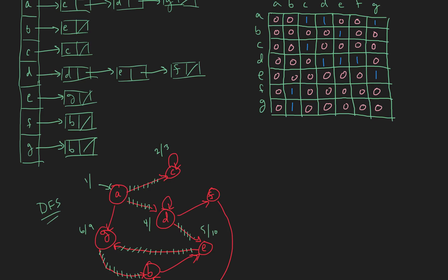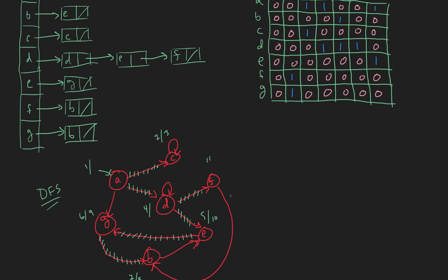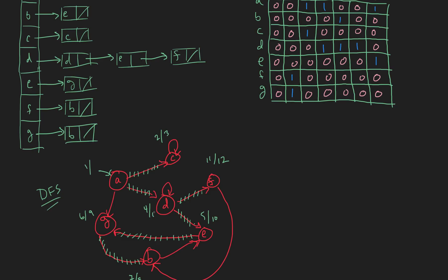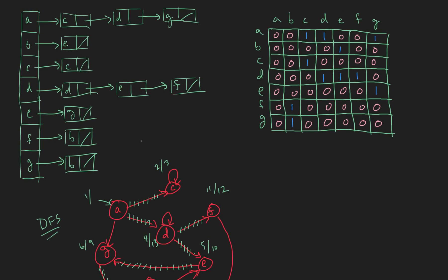Back to D — the next one in D's list is F, so let's take a path over to F, discovered at time 11. F has B in its adjacency list — B has already been discovered, so we're done with F at time 12. That means we are done with D at time 13. And we are done with A because G has already been discovered, so we're done at time 14.